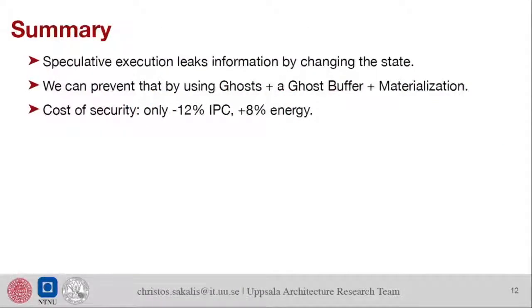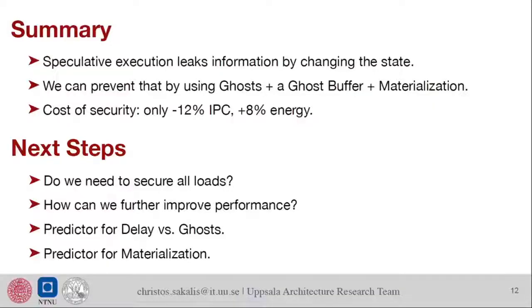To conclude, speculative execution leaks a lot of information. Can we prevent that and how much does this cost? We have a solution which is make accesses as invisible as possible, keep any data that they bring in a small cache that's secured with additional methods. Then when we know it's fine, when we know this is no longer speculative access, when it's time to commit, then you can essentially replay the side effects with what we call materialization. You can get security for a lot of speculative attacks with a 12% performance cost and 8% energy cost.